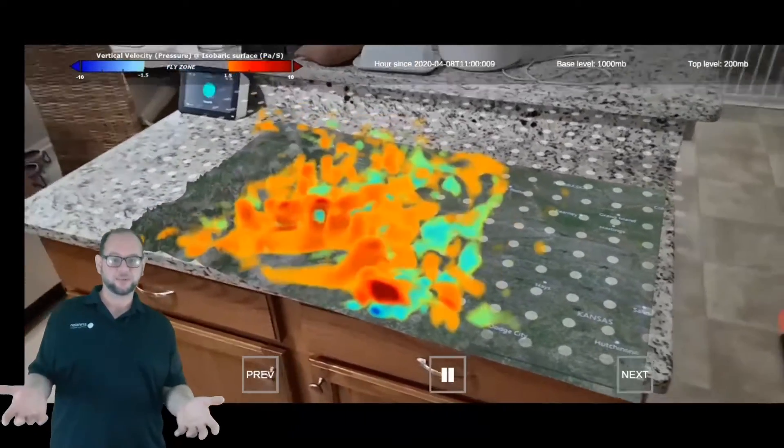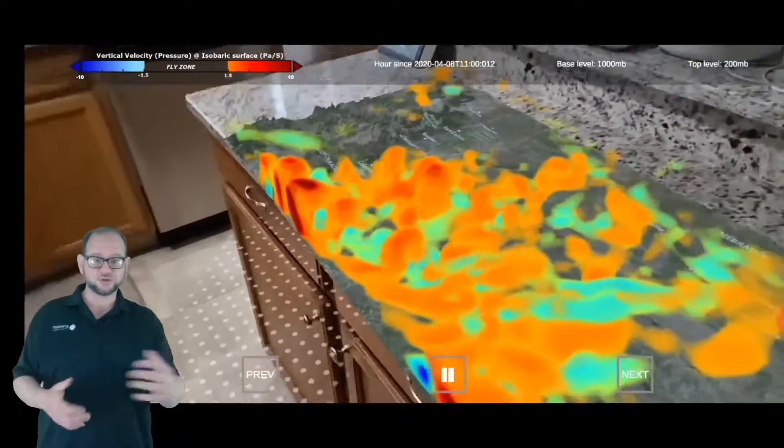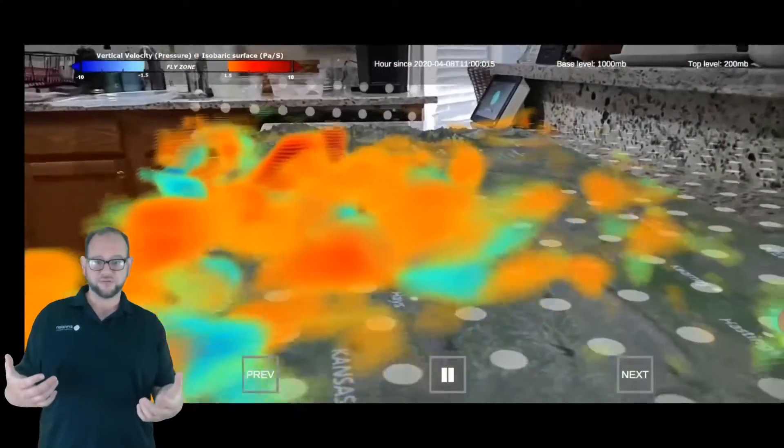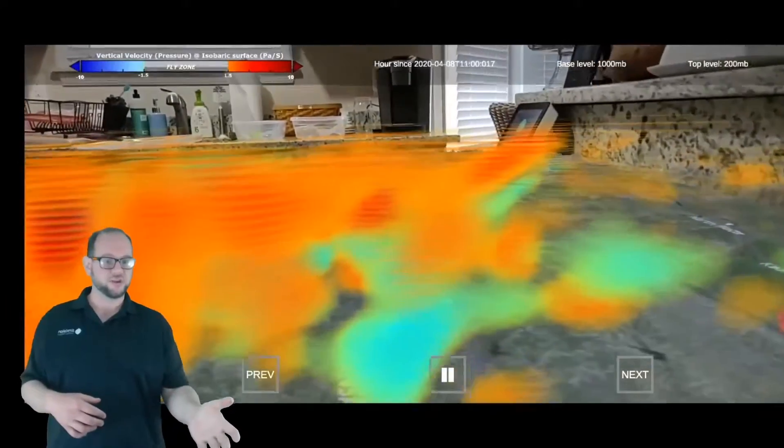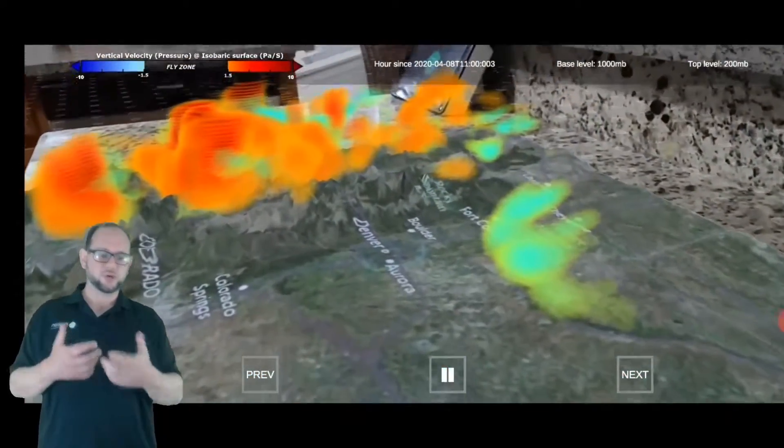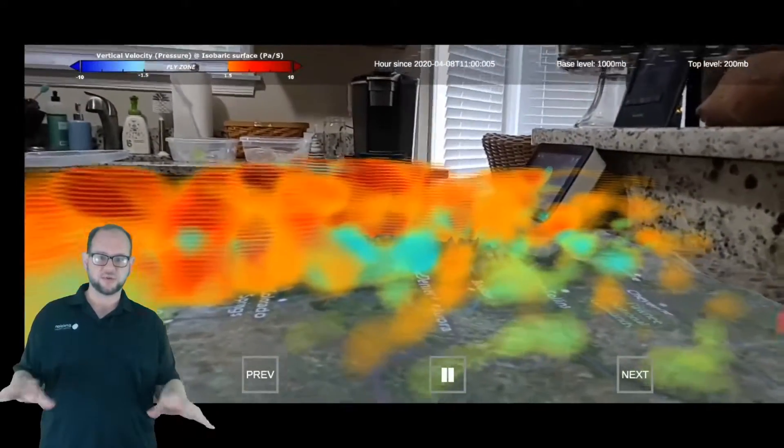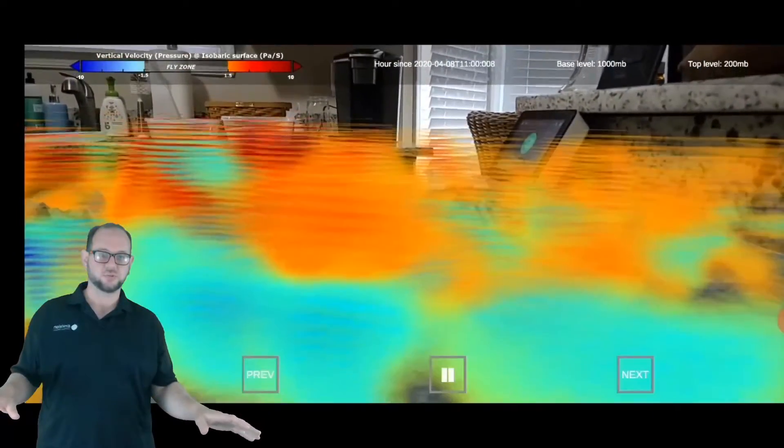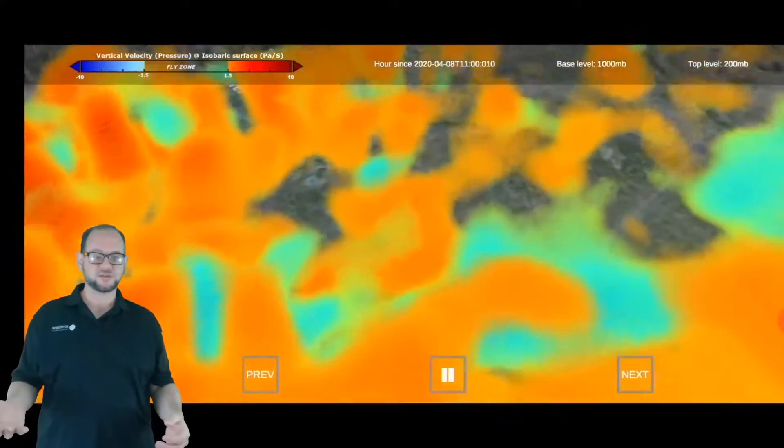So this is tabletop AR. Imagine receiving a push notification on your Apple or Android phone, saying a severe thunderstorm warning or snow is on the way. And you can point your phone at any flat surface and generate beautiful weather visualization, whether it's models or present radar data.